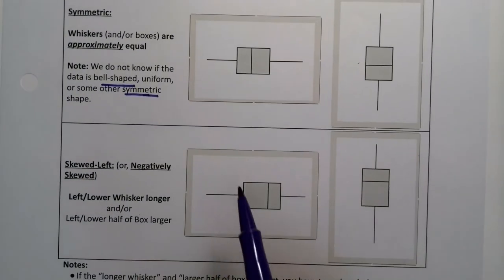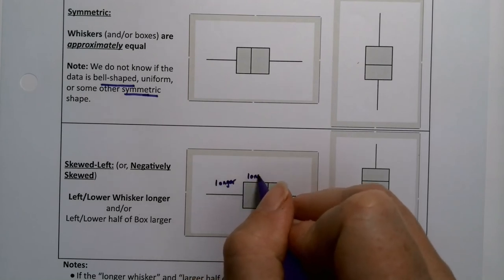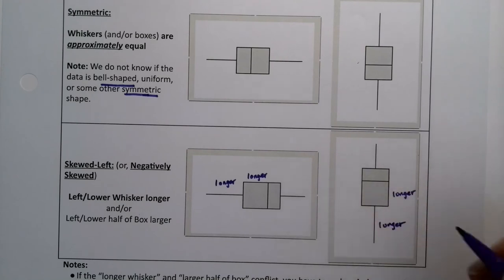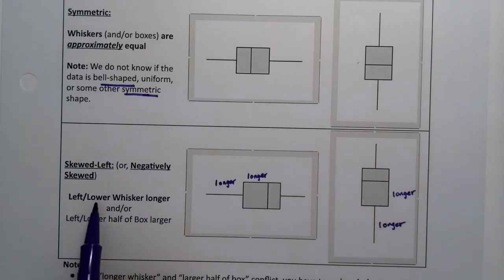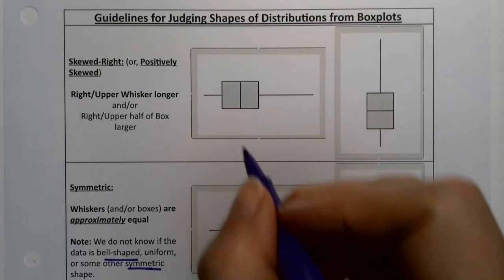Skewed left would have a longer side over here, so this is longer or this is longer, or both. Longer here on this low side and longer here on the low side. So the lower or the left side or the lower side is longer. In symmetric, they're roughly equal.